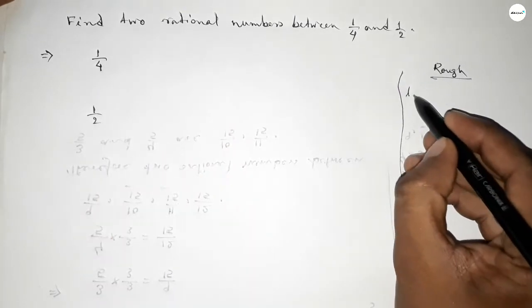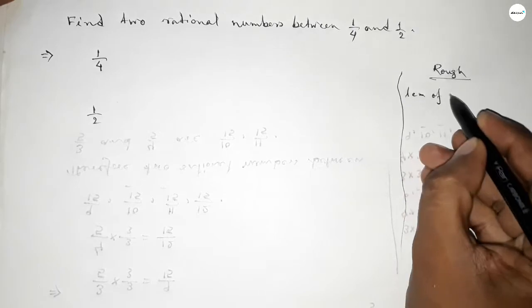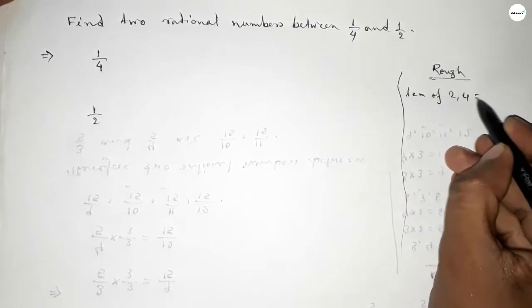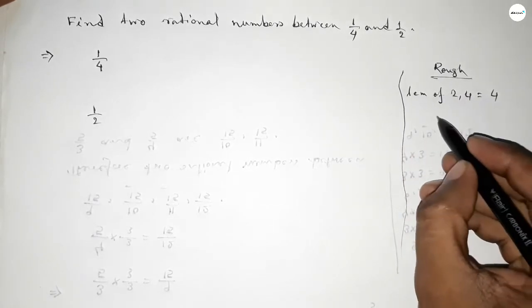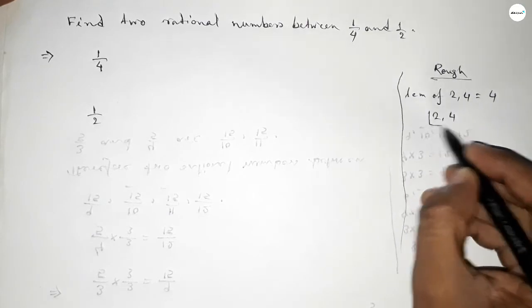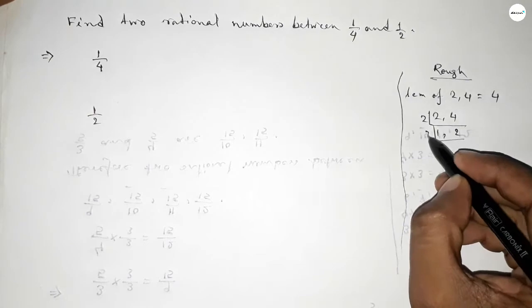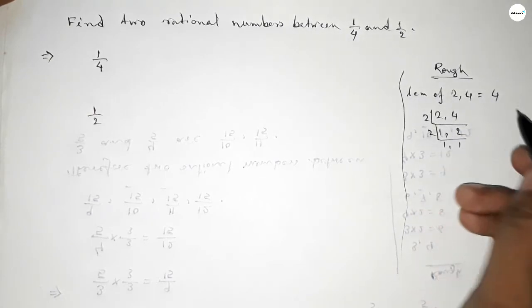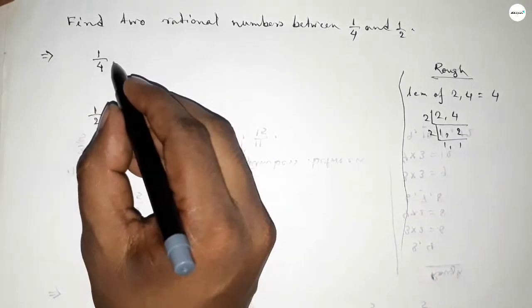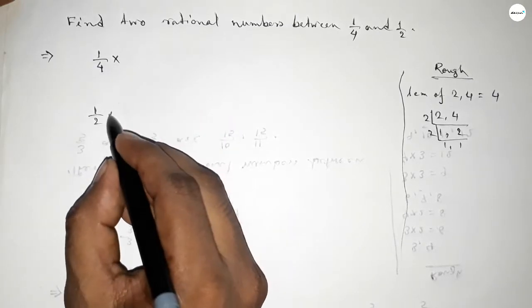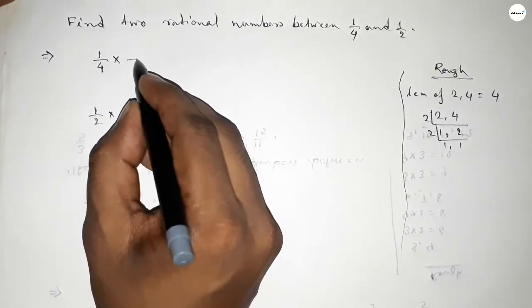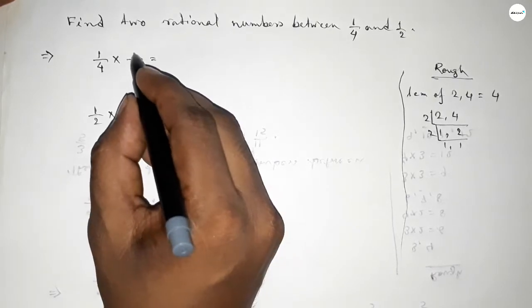First we have to find out the LCM of 2 and 4, and their LCM is 4. If you factorize this by dividing by 2, this is 1, 2. If you also divide by 2, the LCM is 4.